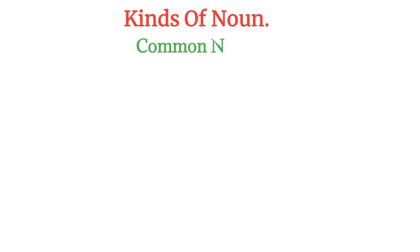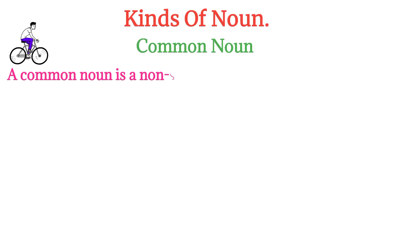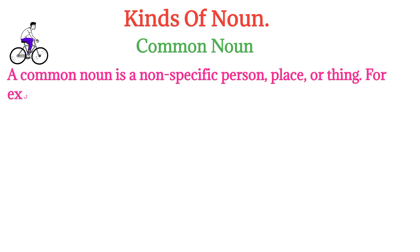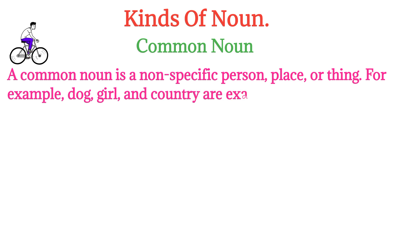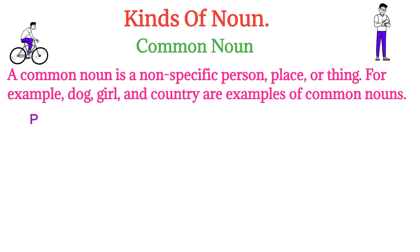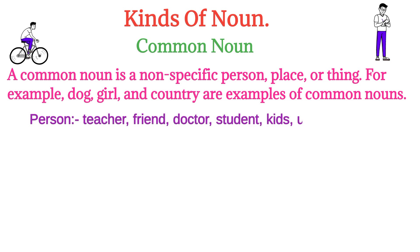A common noun is a non-specific person, place, or thing. For example, dog, girl, and country are examples of common nouns. Some examples of common noun — person: teacher, friend, doctor, student, kids, uncle, aunt, etc.